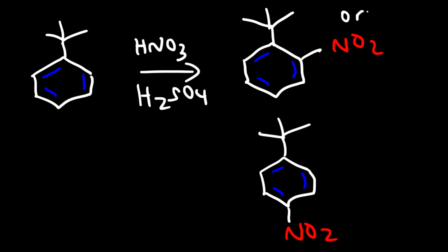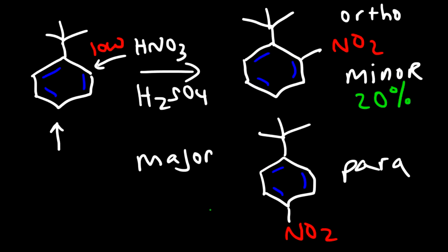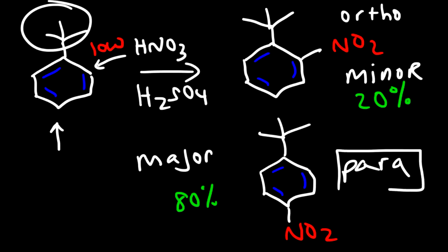Here's the ortho product and here is the para product. The para product will be the major product because that site is more accessible, whereas the ortho site is too sterically hindered, so the yield for the ortho product will be low. According to one textbook, the ortho ratio is roughly 20% and the para ratio is 80%. When using bulky groups, the para product will be the major product; with a non-bulky group like methyl, the ortho product will be slightly above the para.